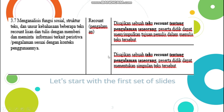Now we continue to the next prediction. KD 3.7: Menganalisis fungsi sosial, struktur teks, dan unsur kebahasaan beberapa teks rekaun lisan dan tulis dengan memberi dan meminta informasi terkait peristiwa atau pengalaman sesuai dengan konteks penggunaannya. Materinya adalah rekaun pengalaman. Ada dua pertanyaan di pilihan ganda.